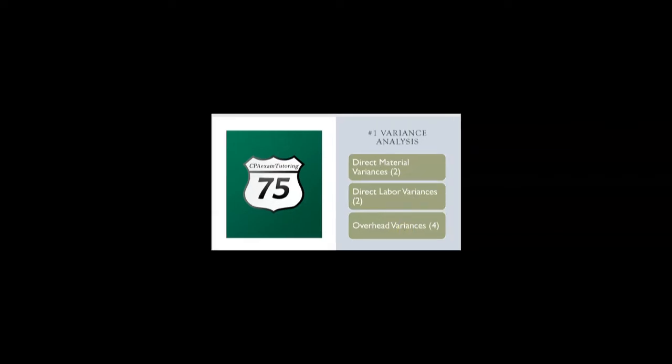I have another YouTube video all about direct labor variances and a third YouTube video all about overhead variances. There are two direct material variances, two direct labor variances, and four factory overhead variances, making a total of eight. With eight variances, that would make for one heck of a sim on BEC. Watch those three videos in order: direct material variances first, then direct labor, then overhead. My second pick for a BEC sim would be information technology — in particular, types of systems and business processes.